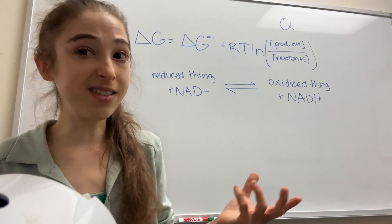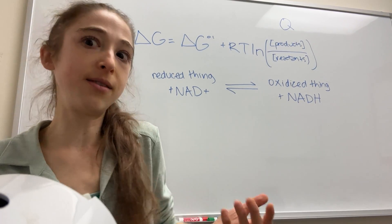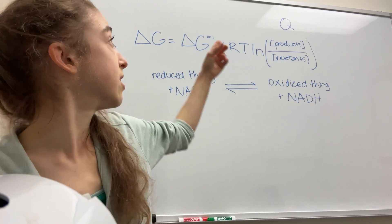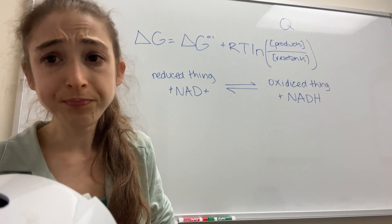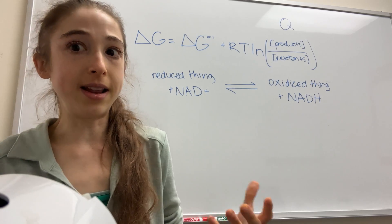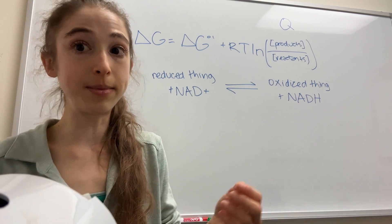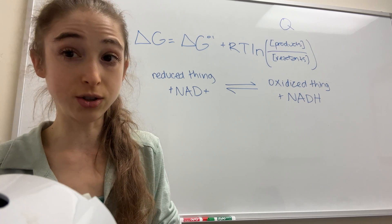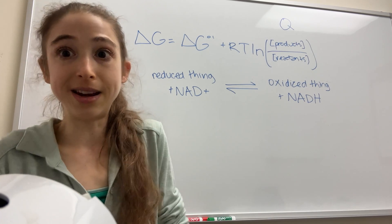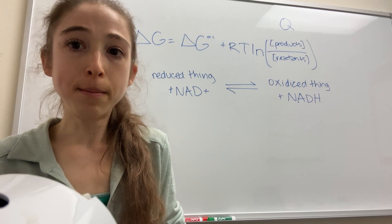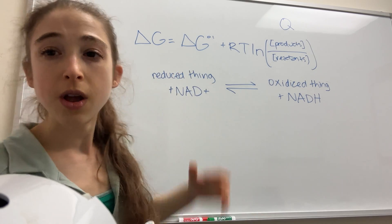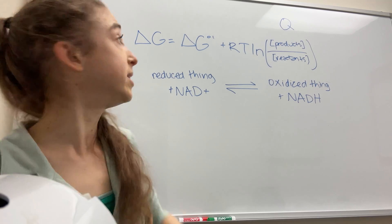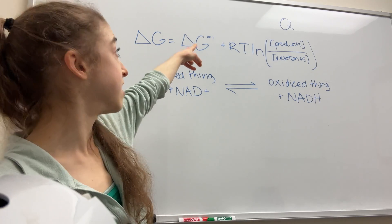We can talk about whether things are inherently favorable and whether things are favorable right now. In terms of inherent favorability, we're talking about things like our delta G-naught prime. We can talk about it being inherently favorable to pass electrons from something with a lower reduction potential to something with a higher reduction potential. But is it favorable right now? For that, we need to think about the delta G, not the delta G-naught prime.